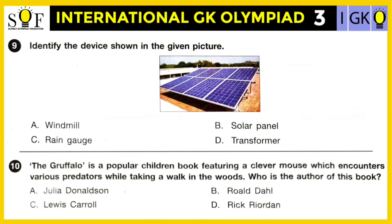Question number nine: Identify the device shown in the given picture — is it a windmill, solar panel, rain gauge, or a transformer? The correct answer is a solar panel. A solar panel converts sunlight into electrical energy.